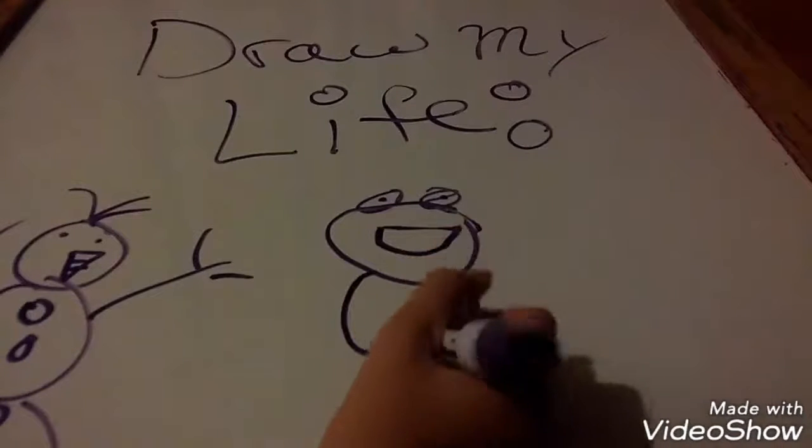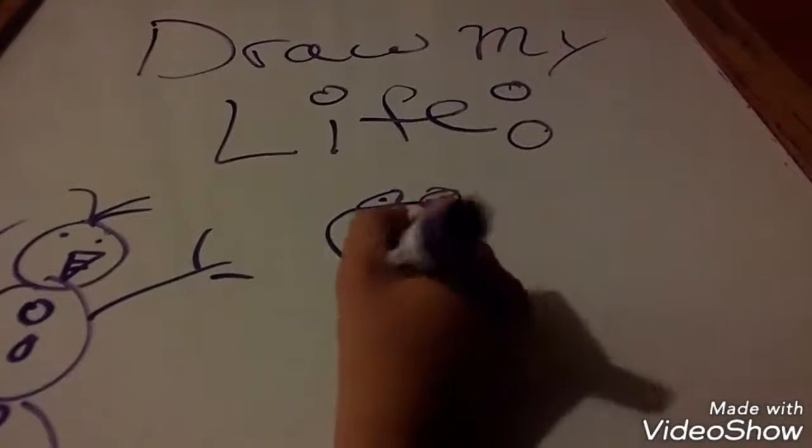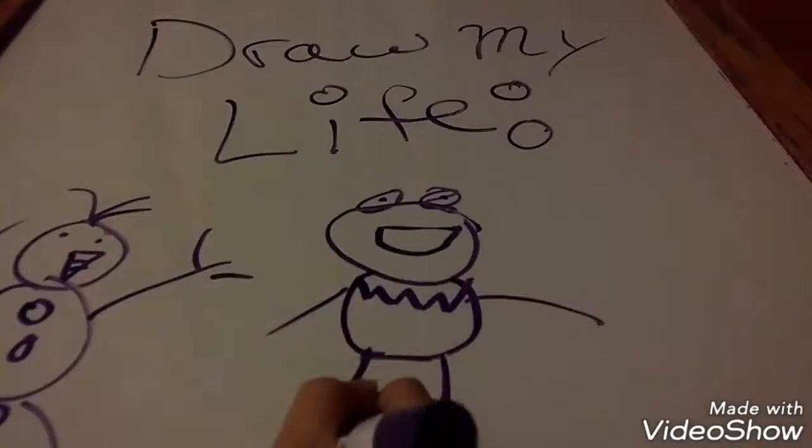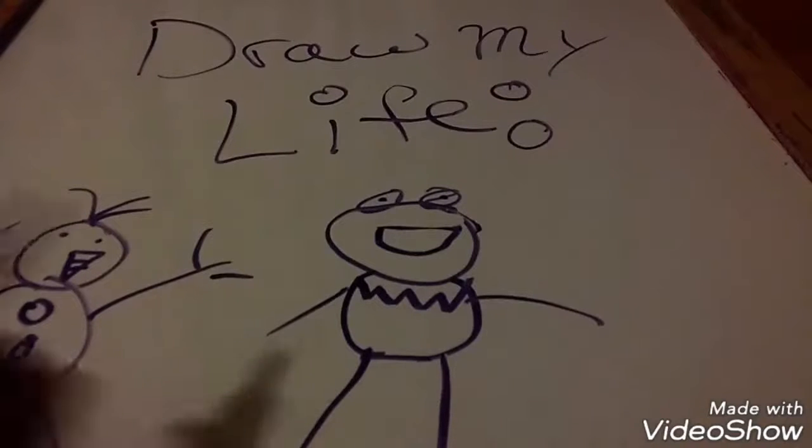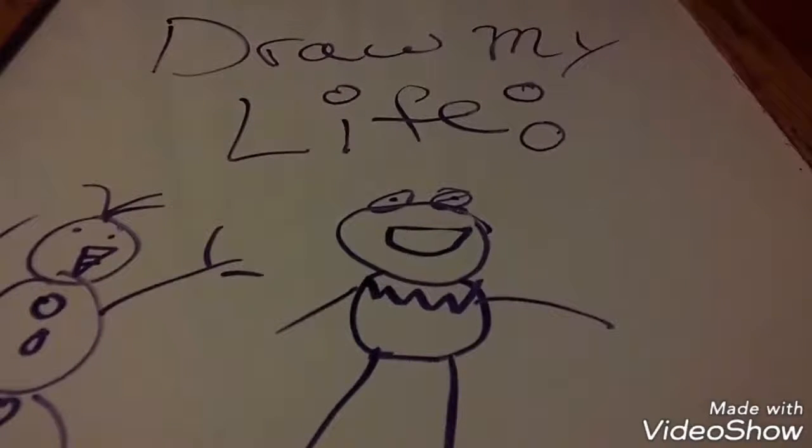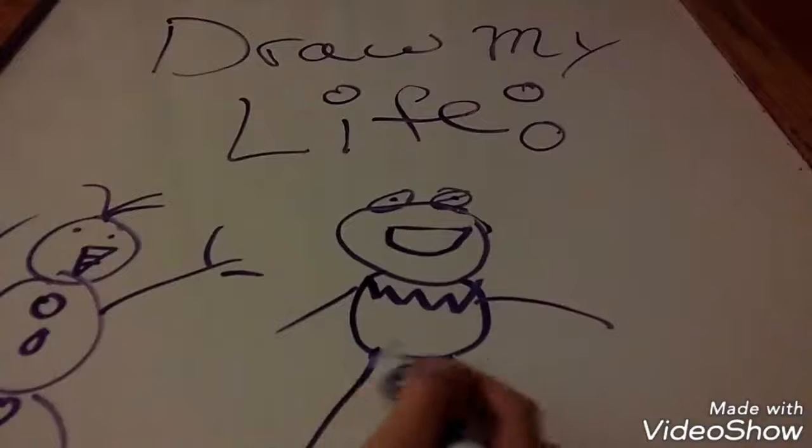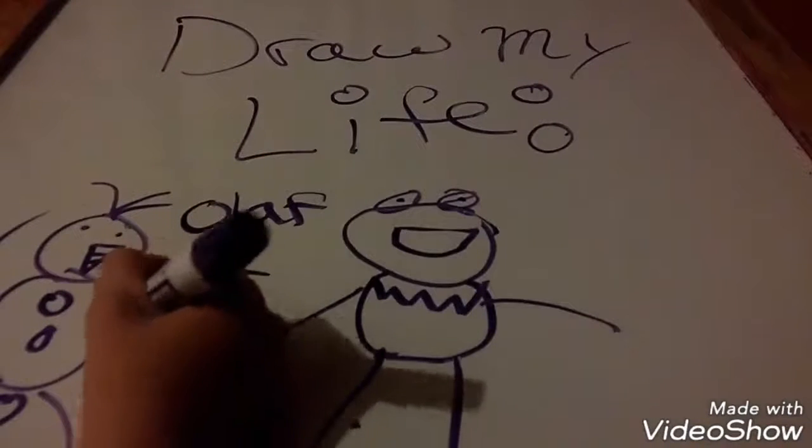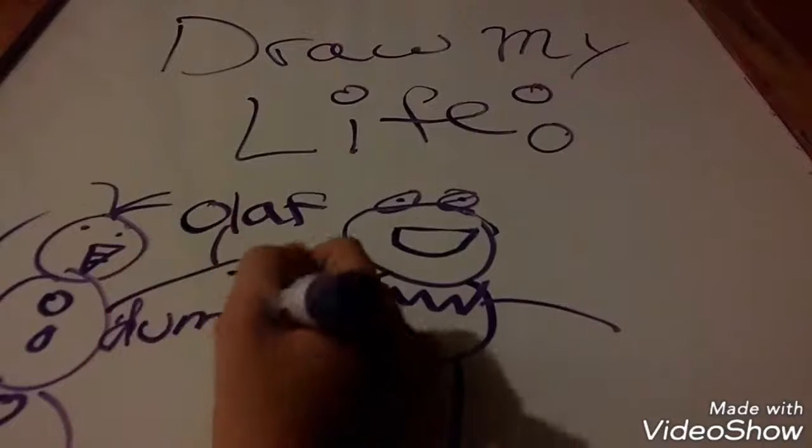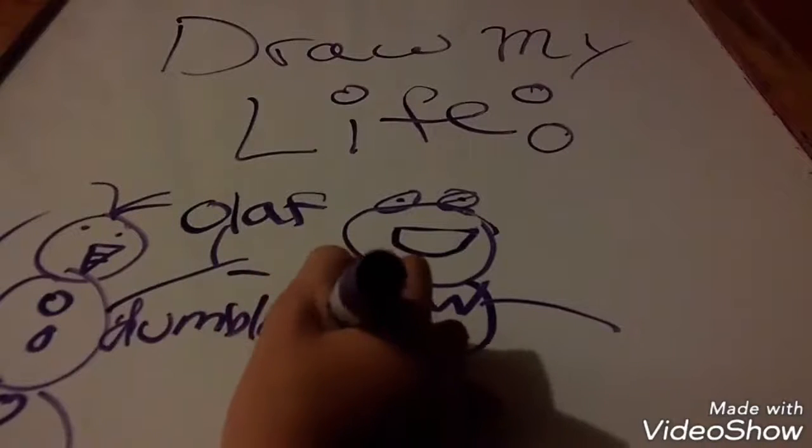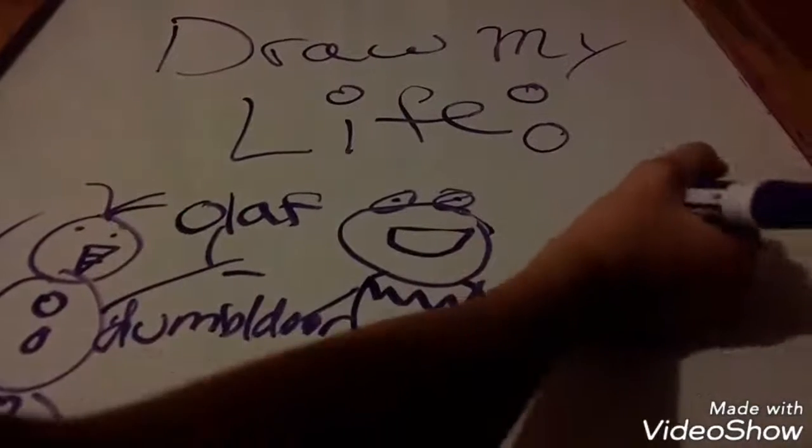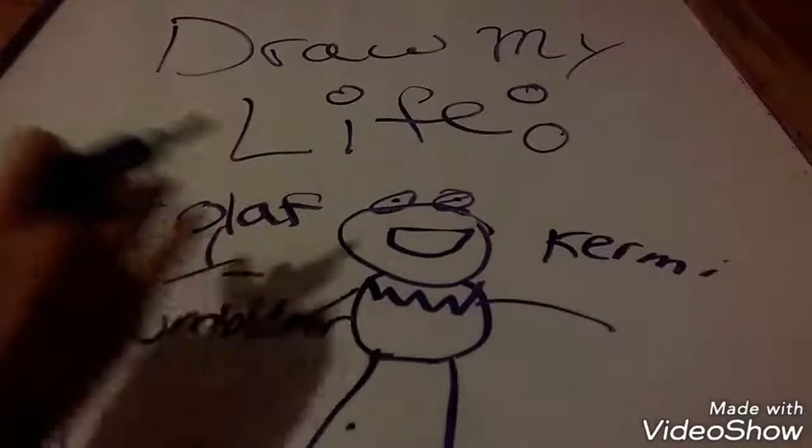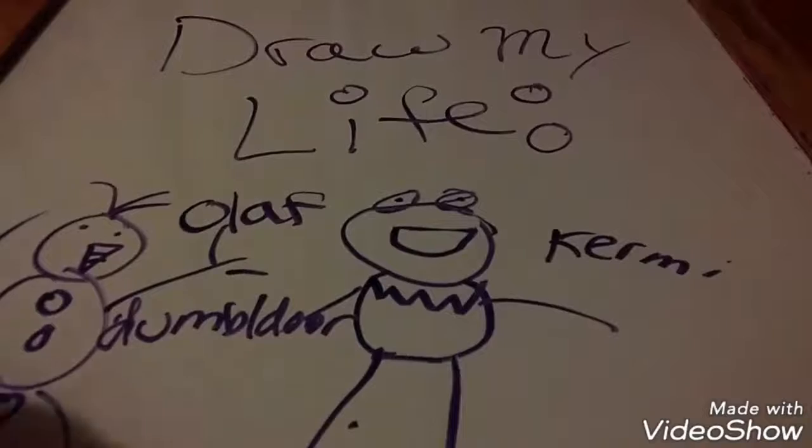So it all began with these two goofballs met. Please excuse my drawings, because I know I suck. Okay, so basically Olaf from Frozen and Kermit. Olaf got the nickname Dumbledore. And Kermit is just Kermit. So, want to know how these two met?